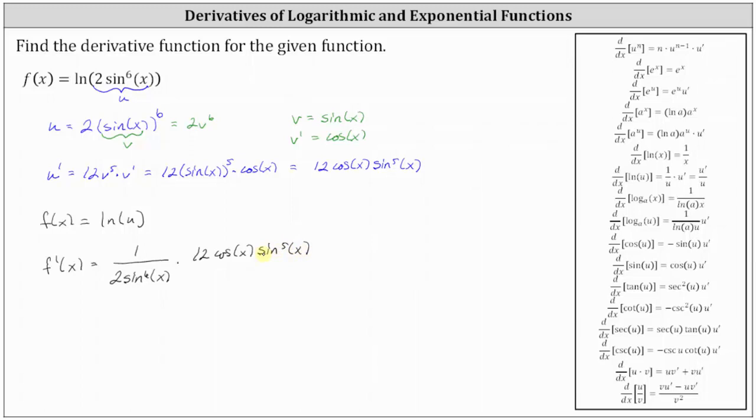And let's write this as a fraction with a denominator of 1. And now let's simplify. Notice 12 and 2 share a common factor of 2, giving us 6. Also notice how we have five factors of sine x in common between the numerator and denominator. Sine to the fifth x simplifies to 1, and sine to the sixth x simplifies to just one factor of sine x.